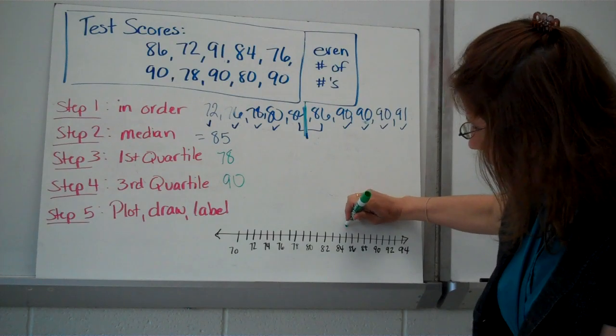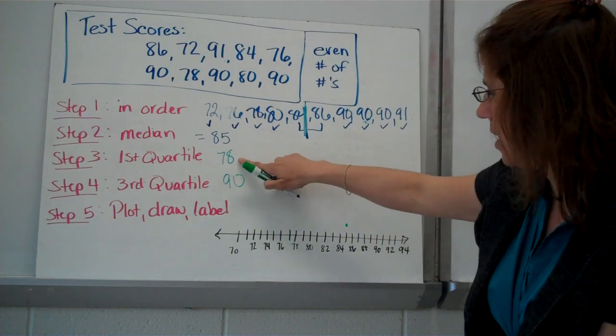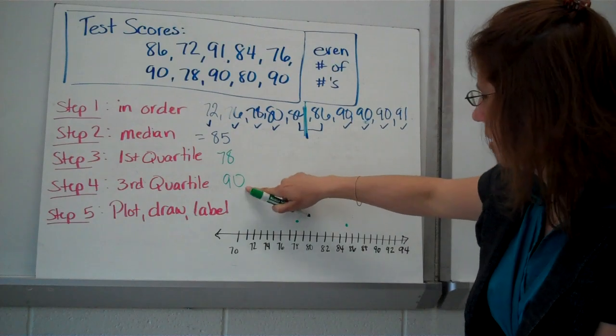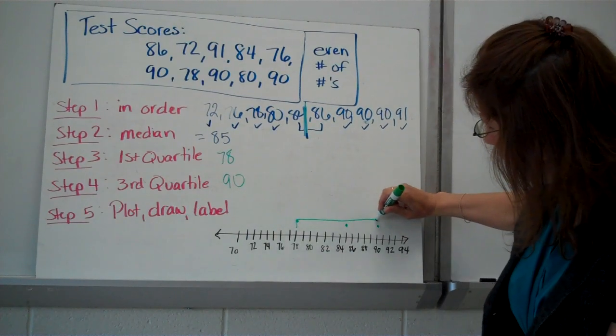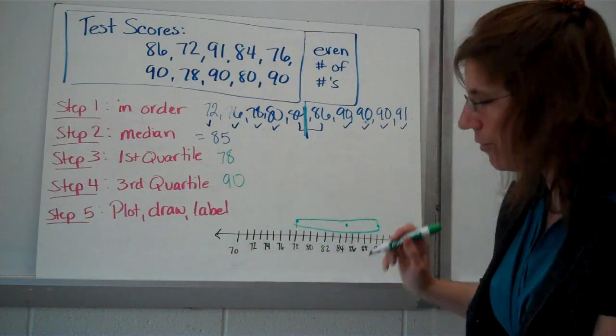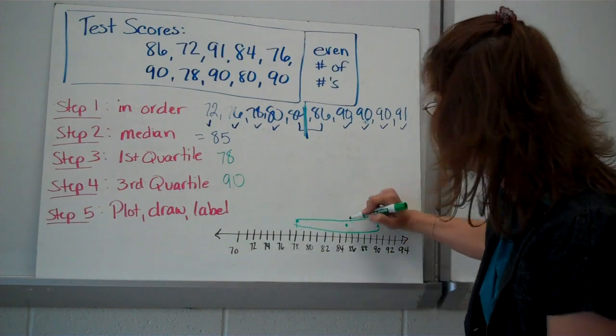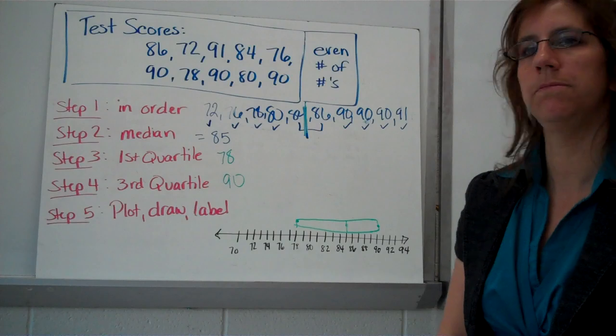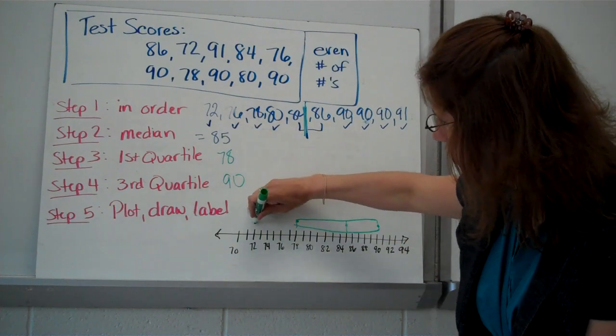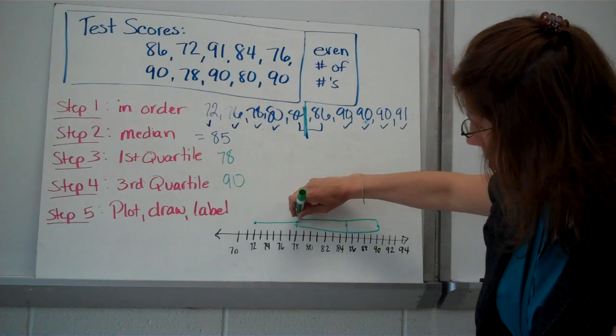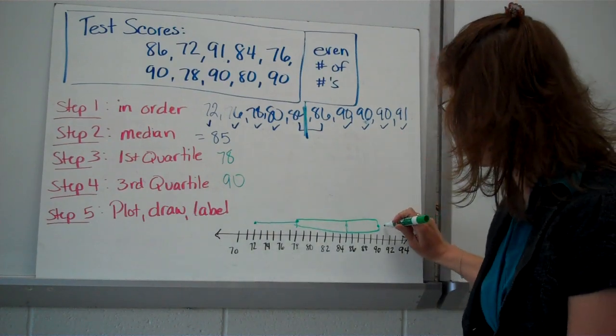Notice how I'm putting a point above the number line. 78 is my first quartile, and 90 is my third quartile. That's what you put your box around. Hopefully, a lot neater than I am right now. And you have a line going through here.